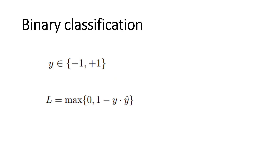Then we have binary classification, which is very different from regression because in this case you're classifying things. By the word itself — binary means two. We have the hinge loss, which can have a value of negative one or positive one. This value tells you how close or how far a prediction is from reality. This value is actually before the application of any activation function, which is an important thing to consider.